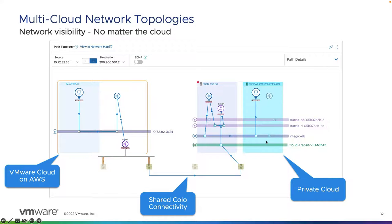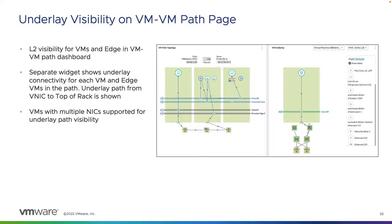We can also see underlay visibility on the VM-to-VM path page. When looking at VM-to-VM paths, we can break it out into two different views: a layer 3 view showing all the VRFs and routing, and a layer 2 view showing each virtual machine, the ESXi host it's on, what VLAN or segments it's utilizing, and the underlying infrastructure — in this case a Cisco UCS chassis with fabric interconnects, FEXs, top rack switches, and what ethernet interfaces the VM is currently traversing. We can click the drop-down to change between source and destination virtual machines, and also toggle between VNICs if multiple are configured.